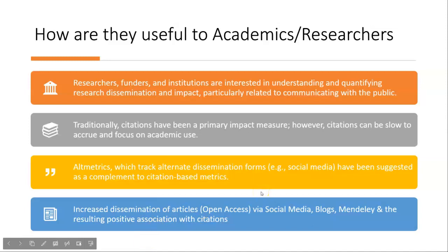So how are they useful to academics and researchers? Researchers, funders, and institutions are interested in understanding and quantifying research dissemination and impact, particularly related to communicating with the public. Funders want to know the impact of your paper beyond just citations — the cultural impact, economic impact, social impact — and Altmetrics can help with that. Traditionally, citations have been a primary impact measure; however, citations can be slow to accrue and focus on academic use, whereas Altmetrics are very immediate, picking up immediate conversations and attention for your papers. Altmetrics, which track alternative dissemination forms like social media, have been suggested as a complement to citation-based metrics.